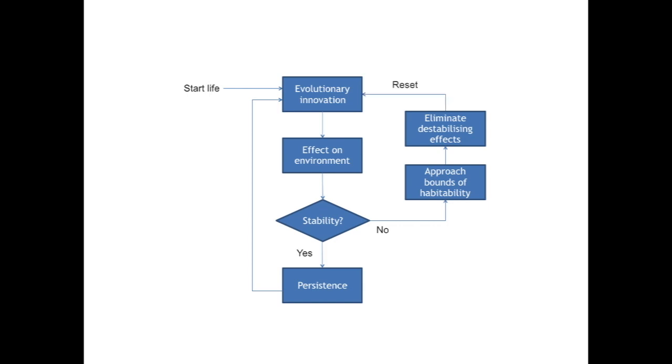From there, new evolutionary innovations arise and the process is repeated. In this way, sequential selection can operate at a global scale with regards to Gaian mechanisms.